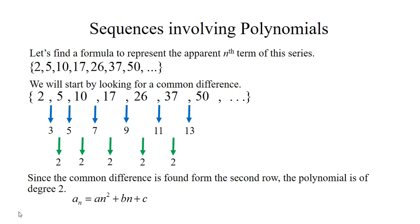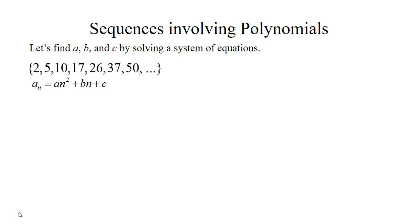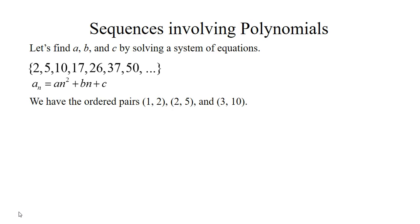So this polynomial is degree 2 and fits the model an squared plus bn plus c. We have to find a, b, and c by creating a system of equations. Our first ordered pair is (1, 2), second is (2, 5), and third is (3, 10). Plugging n equals 1 gives a plus b plus c equals 2; n equals 2 gives 4a plus 2b plus c equals 5; n equals 3 gives 9a plus 3b plus c equals 10. Then we use a matrix to solve the system.